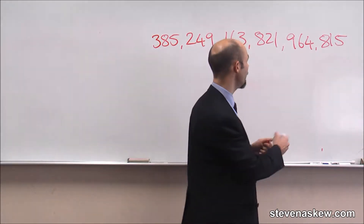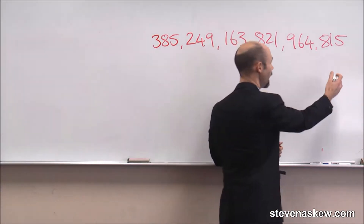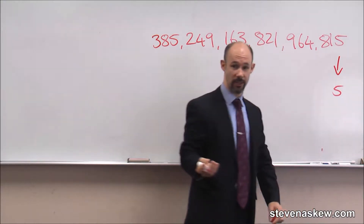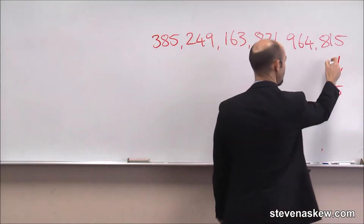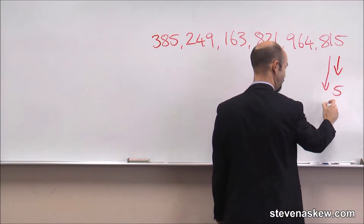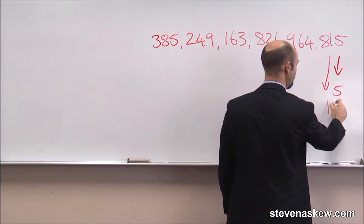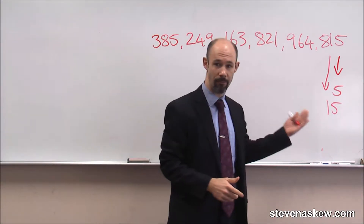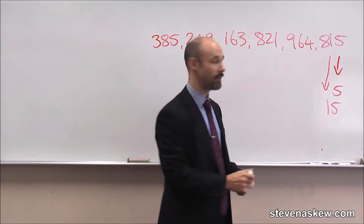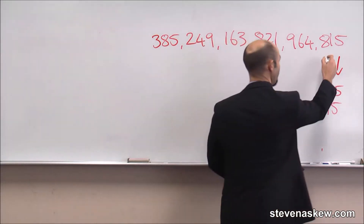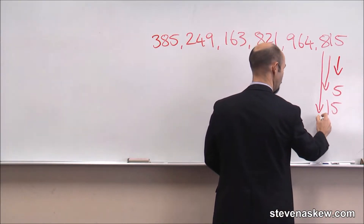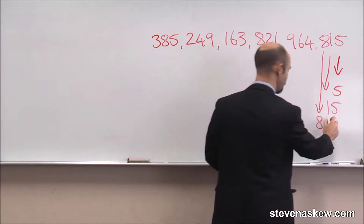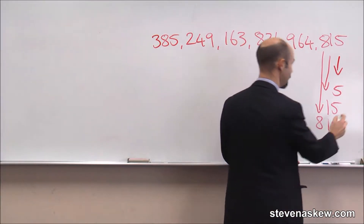This bit over here, we have five, which is a unit. Then we have one, which is a ten. The one plus the ten plus the five is obviously fifteen. And then we have the hundreds over here, which is eight. So, eight hundred and fifteen.